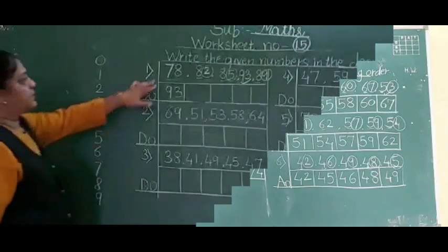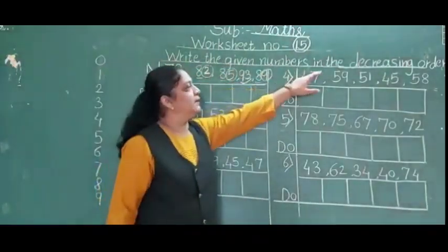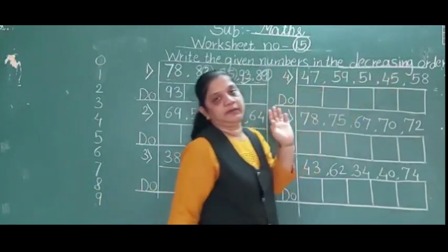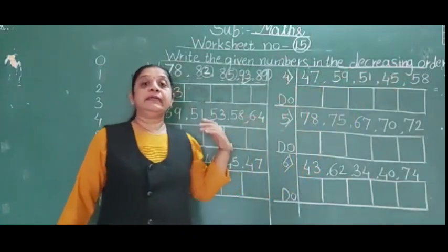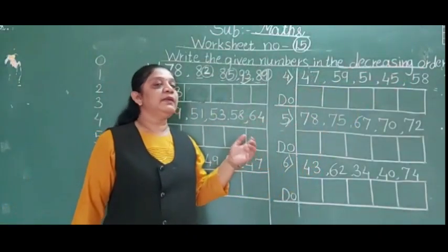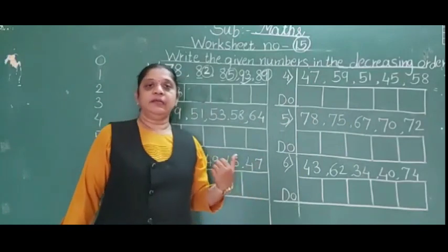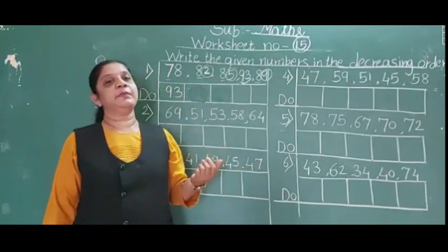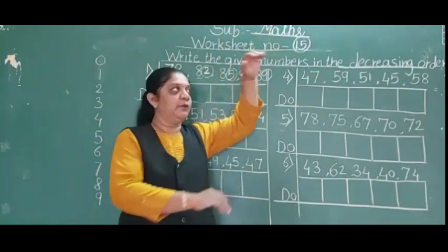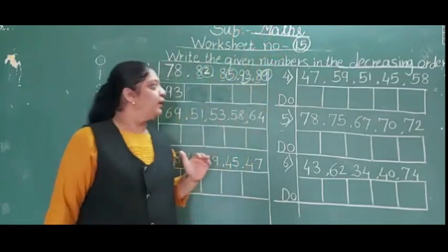Now, write the numbers in the decreasing order. Decreasing order means descending order. Descending order means big to small.